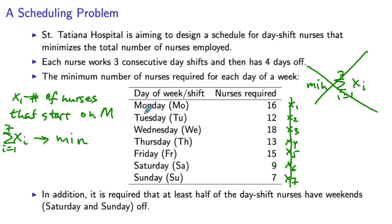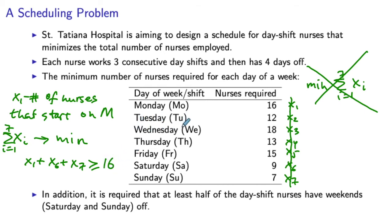To satisfy the requirement constraints, the nurses that work on Monday come from the x1 schedule — the nurses that start working on Monday. But also the nurses that start on Saturday and Sunday also work on Monday. So the total number of nurses that work on Monday will be x1 plus x6 plus x7, and that total needs to be at least 16. Similarly for Tuesday, we have nurses from the schedule starting Monday, Tuesday, and Sunday, so x1 plus x2 plus x7 must be greater than or equal to 12.